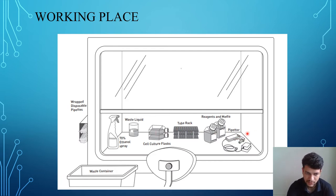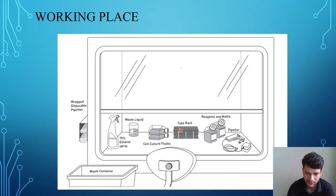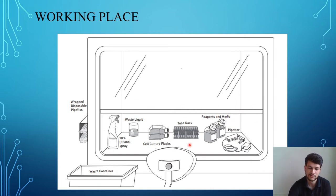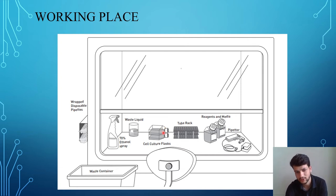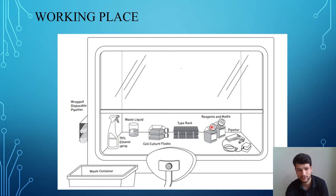This is the waste container for discarding waste. This is 70% ethanol for spraying. All these things should be inside the hood and wiped with ethanol before putting them in. This is the tube rack, these are the cell culture flasks, and this is the pipette used to remove or add media in the flasks. All procedures in cell culture are only done inside the hood — you don't have to open the lids of flasks or media bottles outside the laminar airflow.